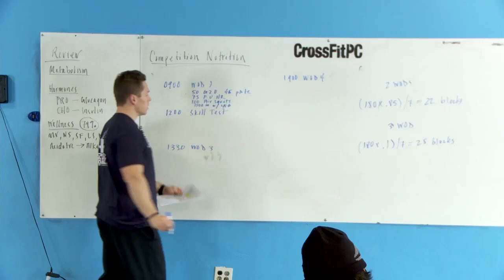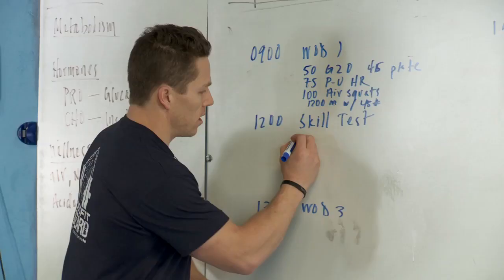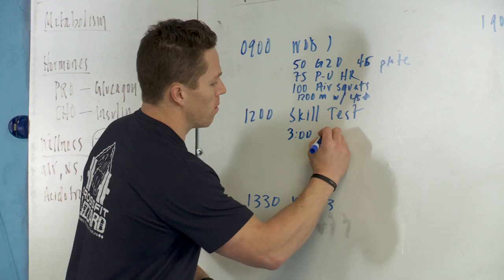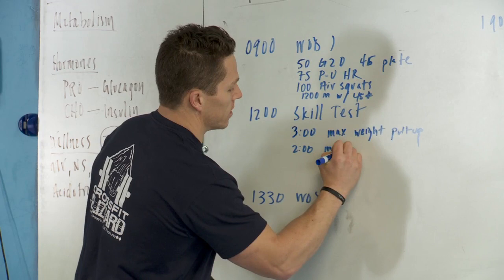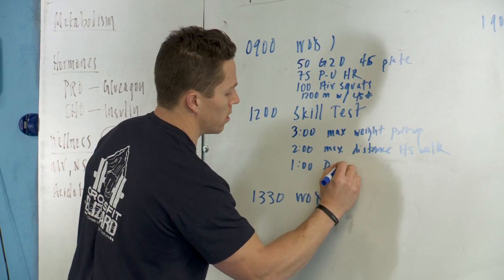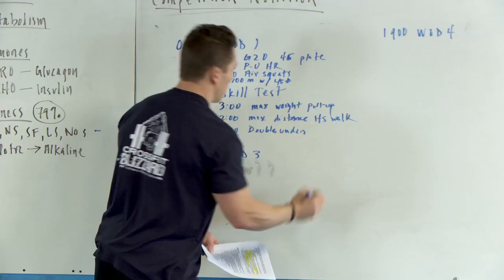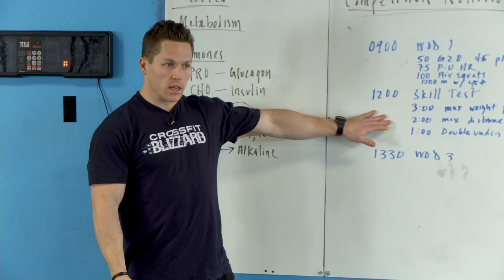Skill test, I'll give you what the skill test is: three minutes max weight push-up pull-up, two minutes max distance handstand walk, one minute double unders. Difficult, demanding, not as demanding as far as the energy expenditure. We're not going to see anywhere near the same from that one to this one.